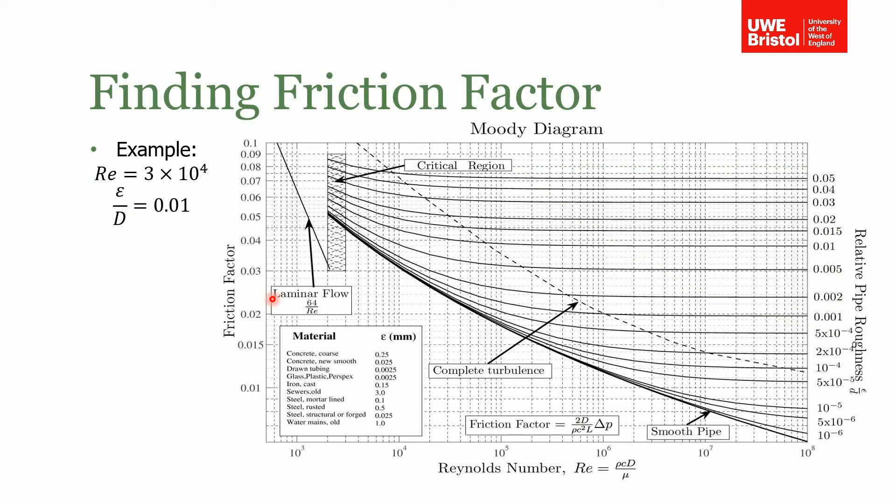So how do we actually find the friction factor from the chart? One last thing I wanted to mention is sometimes you'll be given the roughness of the pipe in the question and sometimes you won't. If you're not, then if you know the material, you can see here on the chart that for a range of common materials there are typical values of roughness which you can read directly off the chart.